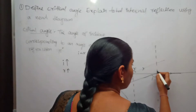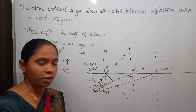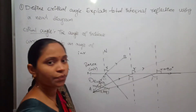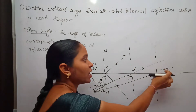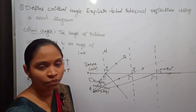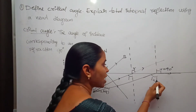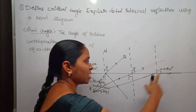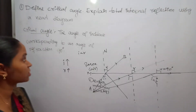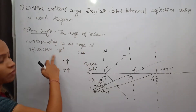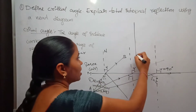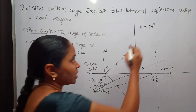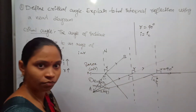As the angle of incidence increases, the angle of refraction also increases, and at some particular angle of incidence the angle of refraction becomes equal to 90 degrees. The corresponding incident angle is known as the critical angle. The critical angle is the angle of incidence corresponding to an angle of refraction of 90 degrees.